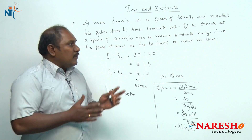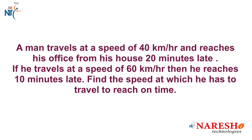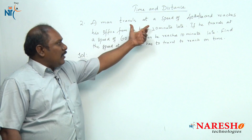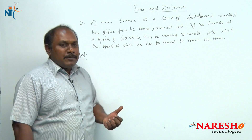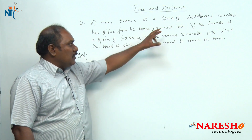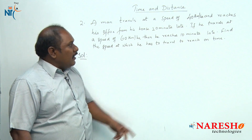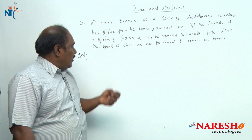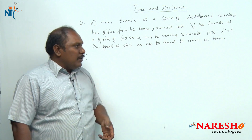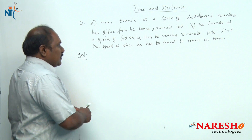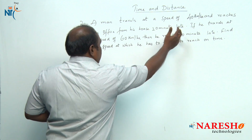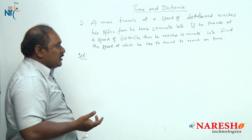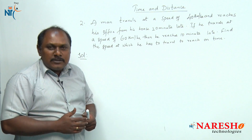Now let us look into one more problem of the same model — the second question. A man travels at a speed of 40 kilometers per hour and reaches his office from his house 20 minutes late. If he travels at a speed of 60 kilometers per hour, then he reaches 10 minutes late. Find the speed at which he has to travel to reach on time. A little bit of common sense says that the answer should be greater than 60 kilometers per hour.